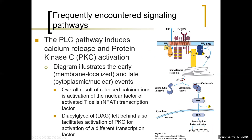Calmodulin is an important adapter protein. It binds calcium ions, undergoes a conformational change making it active, and can then bind a target protein, bringing proteins together so reactions can take place. PIP2 may be phosphorylated by PI3-kinase, creating PIP3, which binds proteins with a specific domain. The PLC pathway induces calcium release and protein kinase C (PKC) activation.